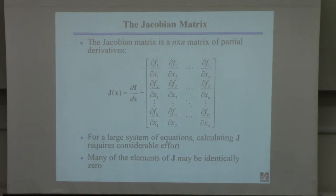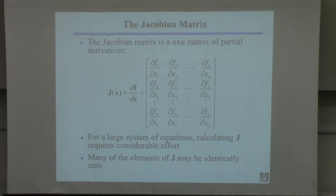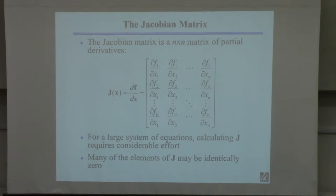If this is a 10-by-10 problem — 10 equations, 10 unknowns — there are 100 elements in this matrix. You can appreciate that you don't want to find these things analytically. For example, that thermodynamic problem from last time — fluid phase equilibria, four equations and four unknowns: two liquid phase compositions, two activity coefficients — that would require 16 derivatives. Calculating 16 partial derivatives is pretty onerous and would keep you from wanting to do this.